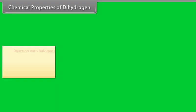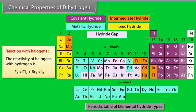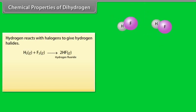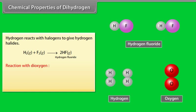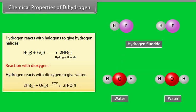Chemical properties of dihydrogen. Reaction with halogens. The reactivity of halogens with hydrogen is fluorine greater than chlorine, greater than bromine, greater than iodine. Hydrogen reacts with halogens to give hydrogen halides. Reaction with dioxygen. Hydrogen reacts with dioxygen to give water.